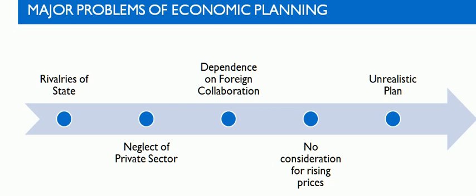The next point is unrealistic plan. Our planners became too ambitious — they wanted to improve the lot of people as quickly as possible. In a bid to do so, they fixed high targets which were so high that even near approximation was not achieved. Thus, there was a problem of the gap between fixed targets and real achievements. So that was all about the problems of economic planning.